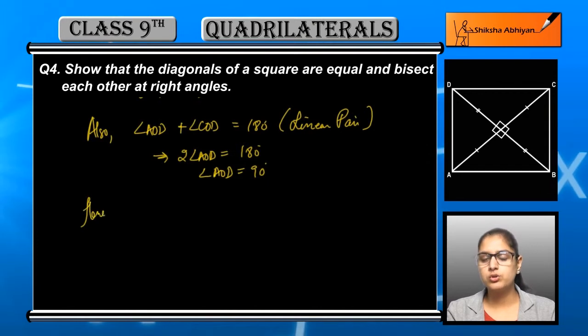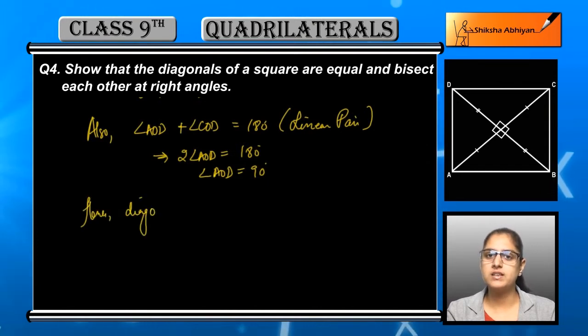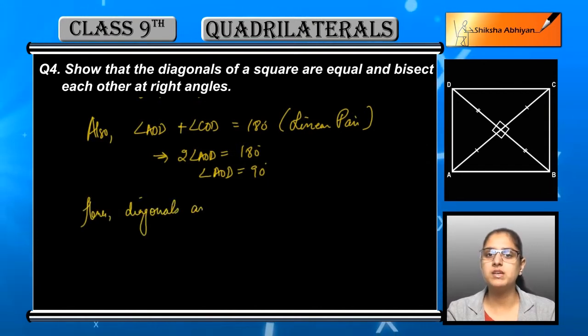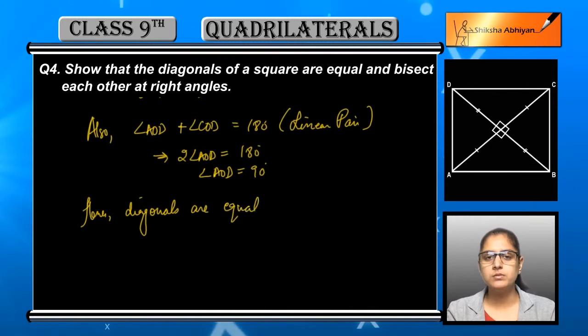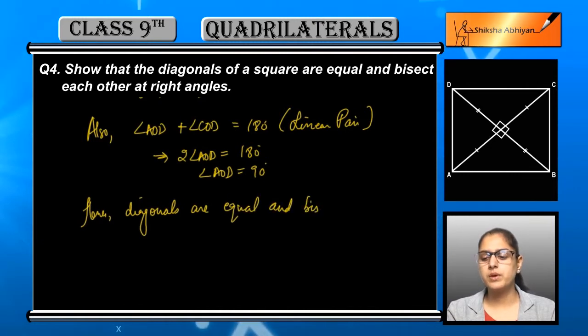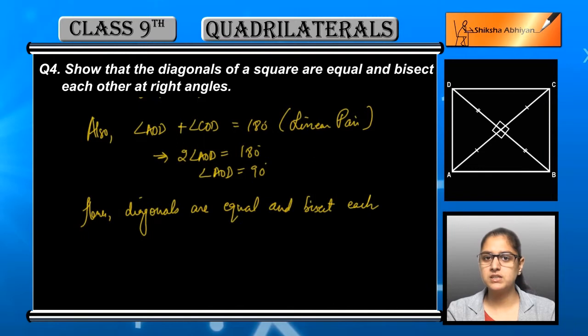In both ways we can say that the diagonals are bisecting each other, so equal parts are divided. Also, angle AOD is equal to angle COD by CPCT — this is equation number 5.